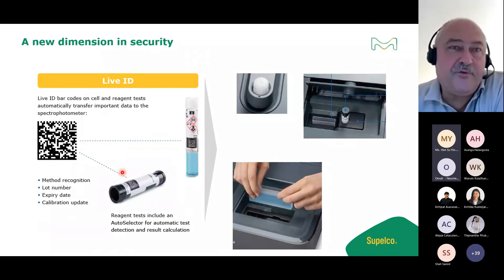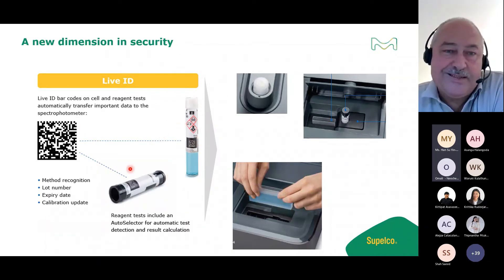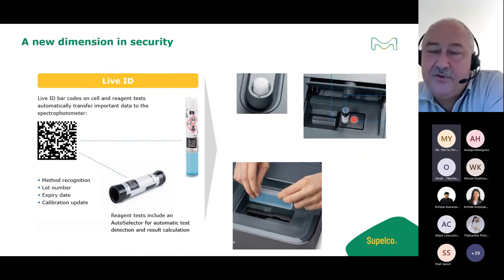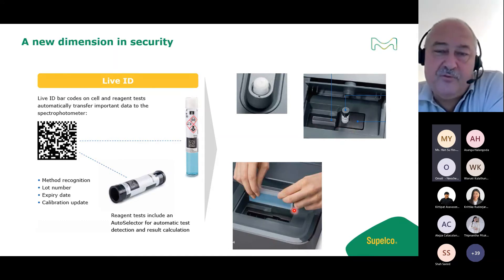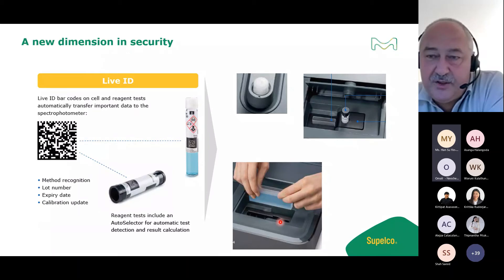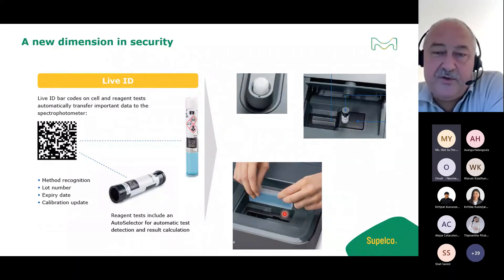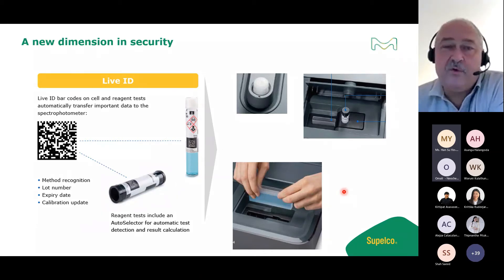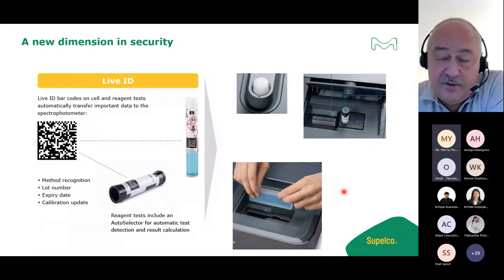The photometers are flexible: the 2D barcode on cell test kits and the auto selector enable automatic method selection. For the Prove 600, you can remove part of the shaft to insert 100 mm cells for ultra-sensitive measurements. A publication exists on ultra-sensitive iron measurement for drinking water using the 100 mm cell.